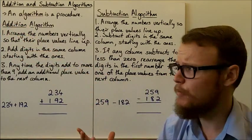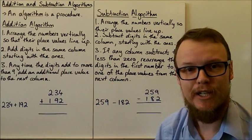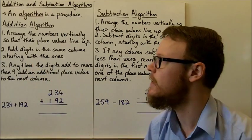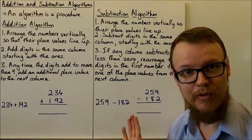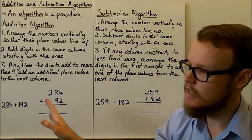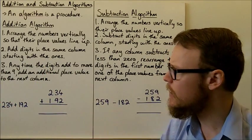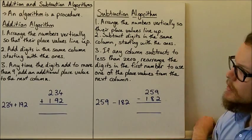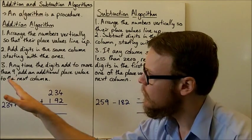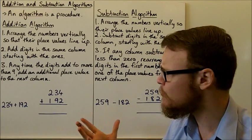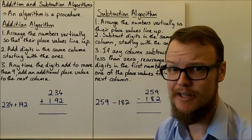Firstly, the addition algorithm. We need to arrange the numbers vertically so that their place values line up. We need to add the digits in the same column. We start with the ones, then we move to the tens, the hundreds and any other place values that we have. Any time that we get the digits adding to more than nine, we can add an additional place value to the next column as we've essentially counted up to the next place value.